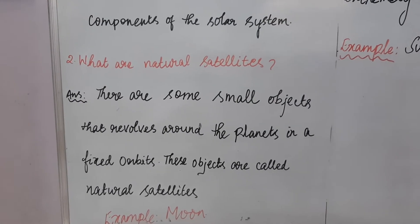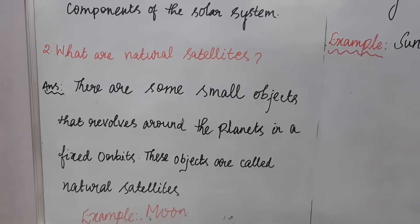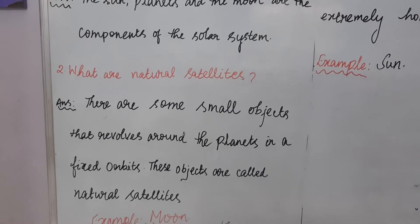So the natural satellites are the small objects that revolve around the planet in a fixed orbit. Example: moon.